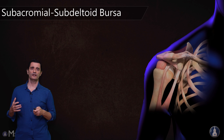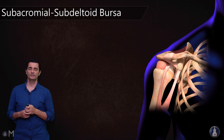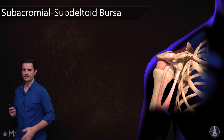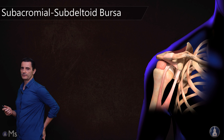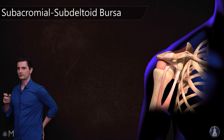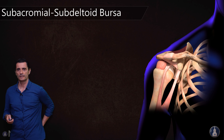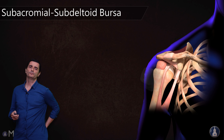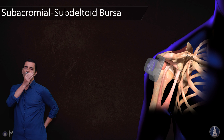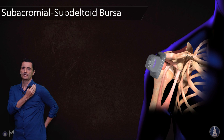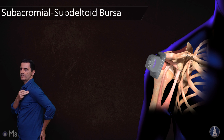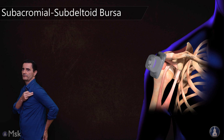To see this bursa with ultrasound, we will ask the patient to put the arm in the modified cross position. We will put the probe almost vertical, slightly rotated over the most anterior part of the shoulder.